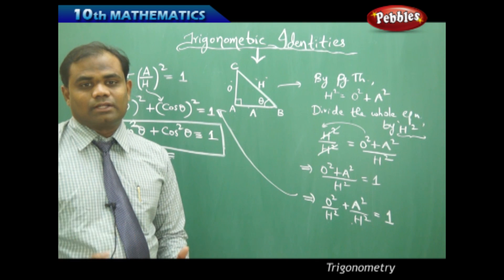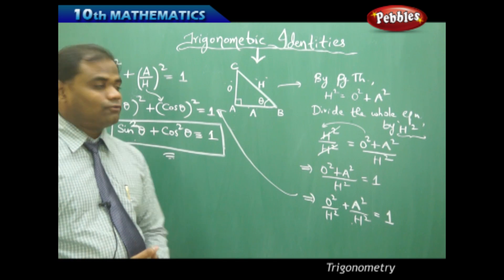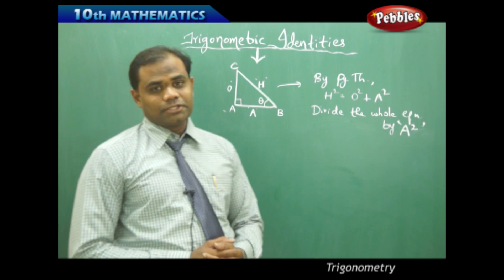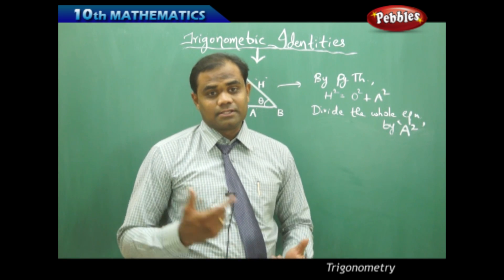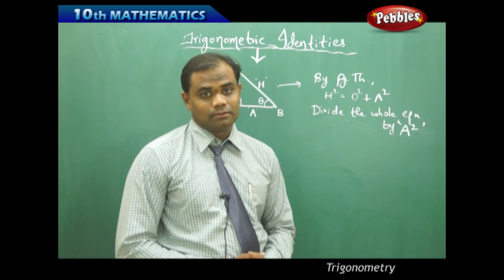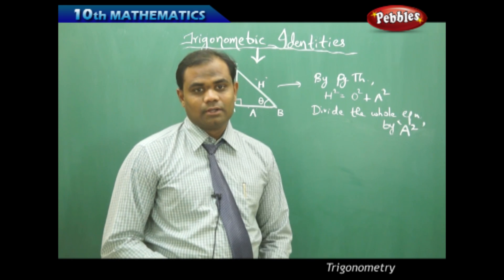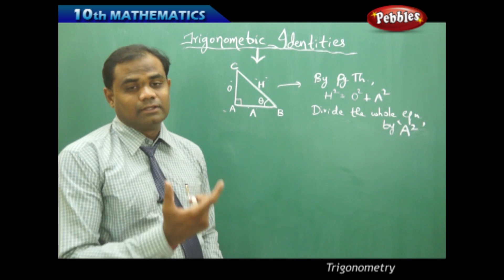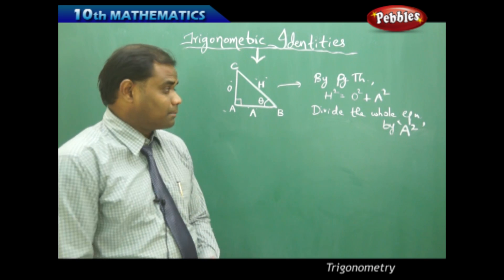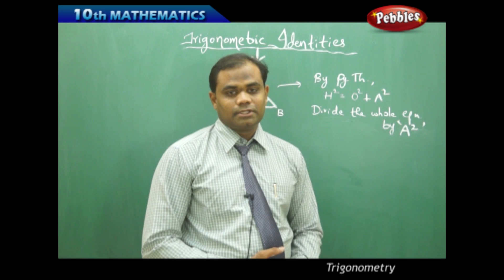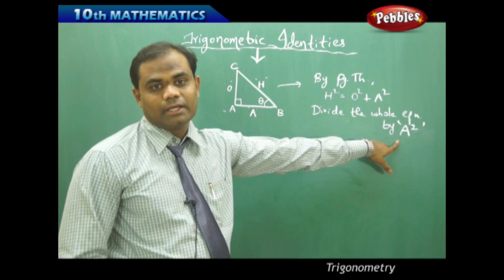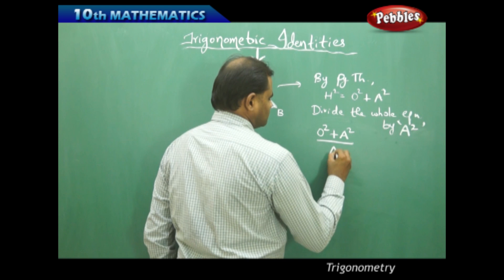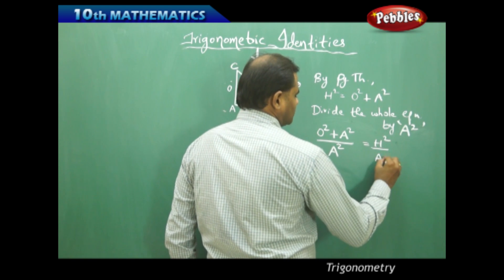The first identity is: sin²θ + cos²θ = 1, which is always equal to 1 for the same angle θ. Now let's see what happens if we divide the original Pythagoras equation by a² instead of h², to discover a new trigonometric identity.